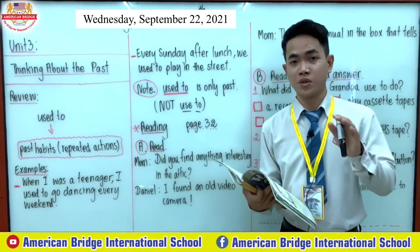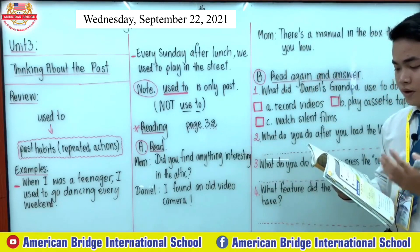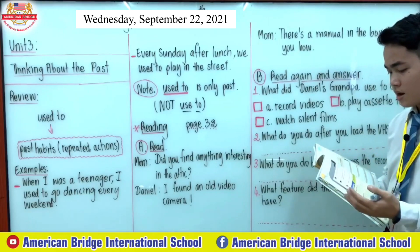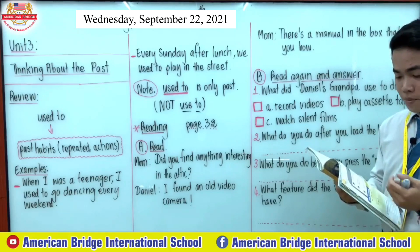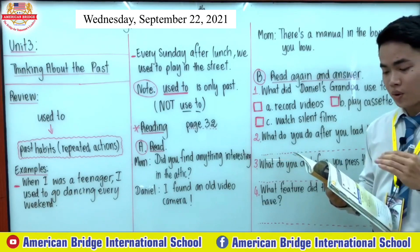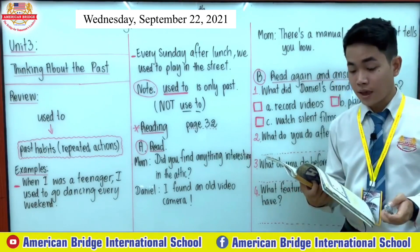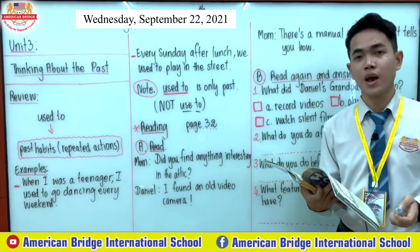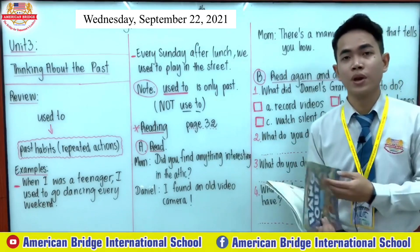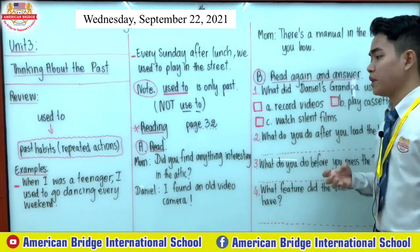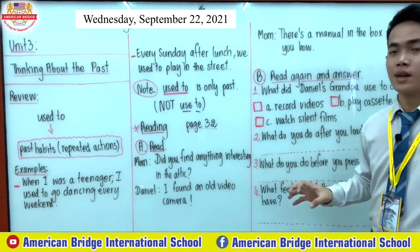This conversation is between Mom and Daniel. Mom said: 'Did you find anything interesting in the attic?' Daniel replied: 'I found an old video camera.' Mom said: 'Grandma and Grandpa used to record videos of you when you were a baby.' Daniel asked: 'How do you use it?' Mom replied: 'There's a manual in the box that tells you how.' Before we read the user manual, let's discuss the conversation and any words you don't understand.